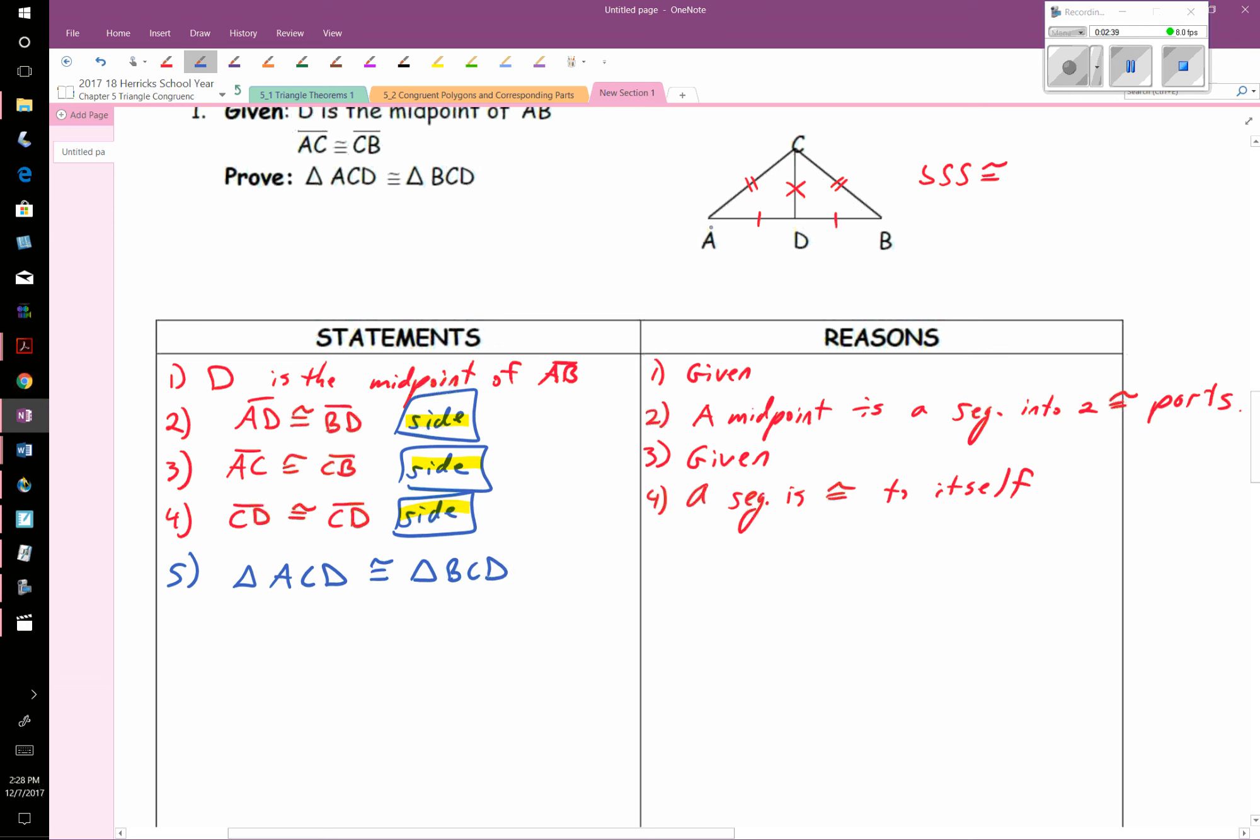A corresponds to B. That makes sense. That's good. C corresponds, both triangles have C in it as one of the vertexes of their angle. And D is one part here. And the vertex D is used here.